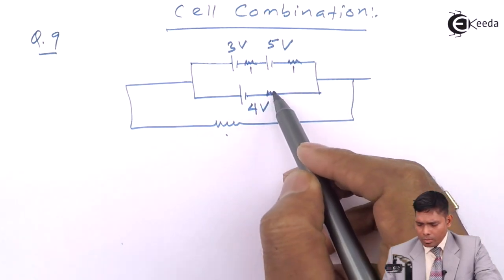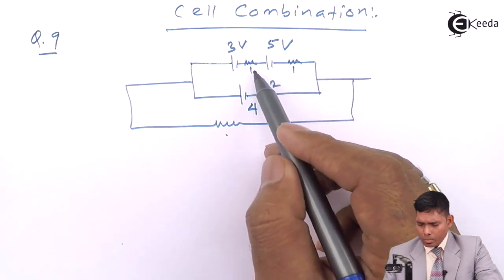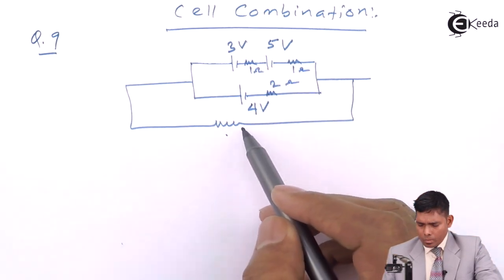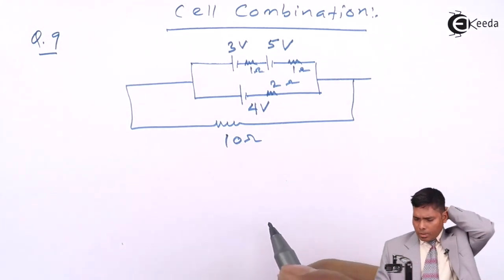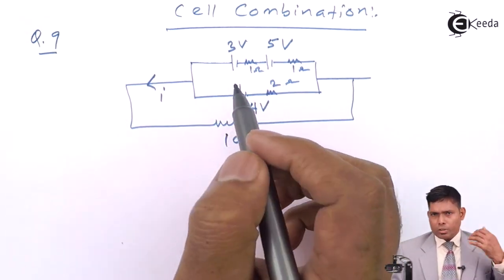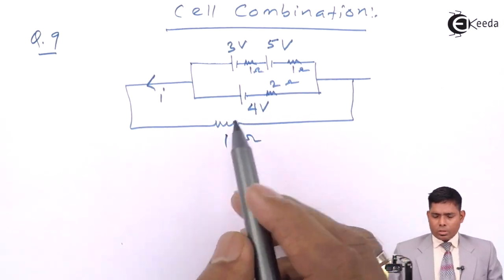1, 1, 2 ohm. Here it is 10 ohm. Question is what is the current flowing through this branch, what is the current flowing through this 10 ohm?